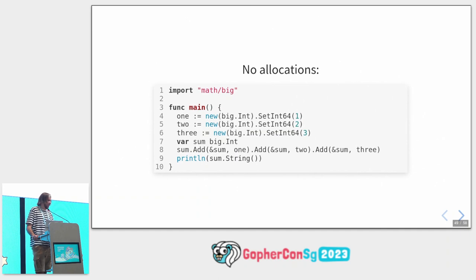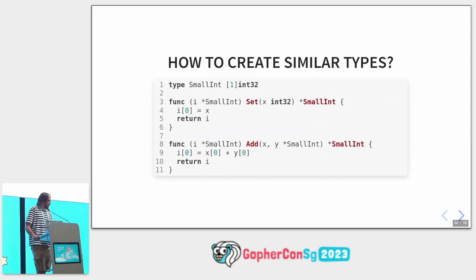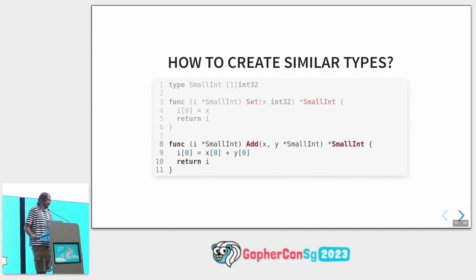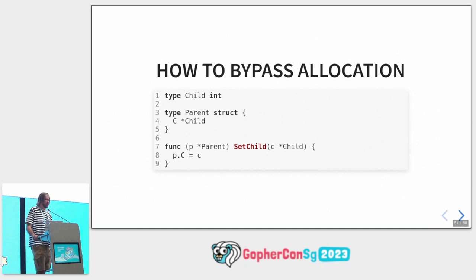Here you can see we create a big integer, assign values to it — 1, 2, 3 — then we calculate the sum and return pointers and use them. But finally we don't have any allocations in this code — everything is calculated on the stack. And we can create similar types. It's just a small integer, like the big one. First we define a type without any pointers inside, create a method to initialize it and return itself, and add a method to change the state.